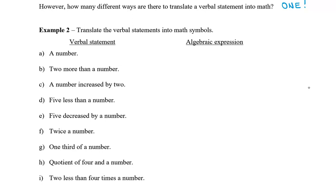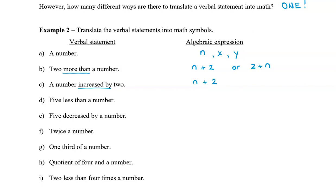So here's the first one: a number. Many people think a number is usually represented by n, but you can actually use any variable you want — n, x, or even y. The next one is two more than a number. We have a number, and then two more than that number, which gives us n plus 2. We could also write it as 2 plus n. The next one is a number increased by two. Increased by means adding, so we have a number and we increase it by two: n plus 2. It sounds a little nicer than 2 plus n, because we have a number and then it's increased by two.